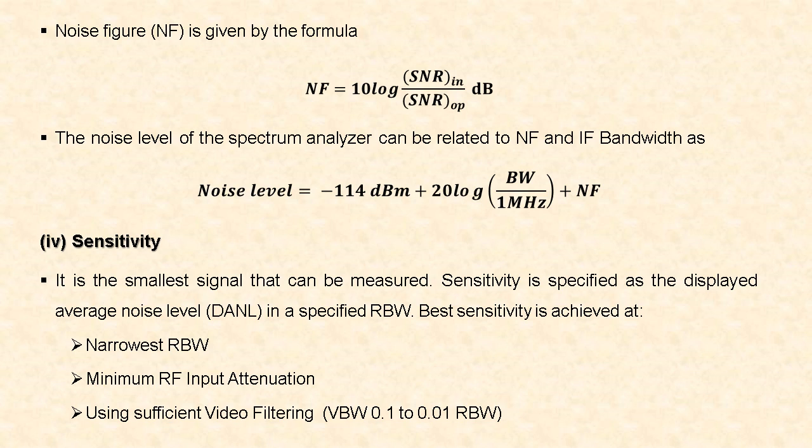The next specification is sensitivity — the smallest signal that can be measured with the spectrum analyzer. It is specified as the Displayed Average Noise Level (DANL) in a specified resolution bandwidth. Best sensitivity is achieved at the narrowest resolution bandwidth, minimum RF input attenuation, and using sufficient video filtering, that is video bandwidth equal to 0.01 times the resolution bandwidth.